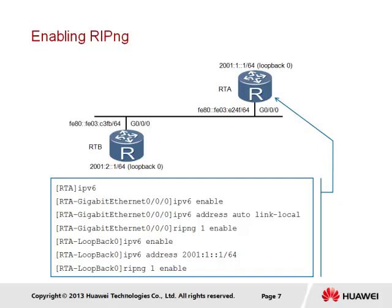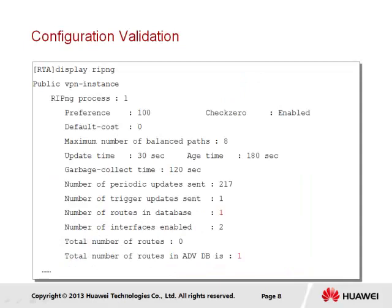In order for IPv6 global unicast addresses or prefixes to be advertised, the same process is performed. An IPv6 global unicast address has been associated with interface Loopback 0 on RTA, enabled to support IPv6, and manually configured with address 2001:1::1/64, with the interface enabled for RIP-NG. This global unicast address will be advertised to peering routers via the link-local address on GigabitEthernet 0/0/0. The display RIPNG command can validate the configuration, showing routes discovered as 1, relating to the prefix 2001:1::/64.